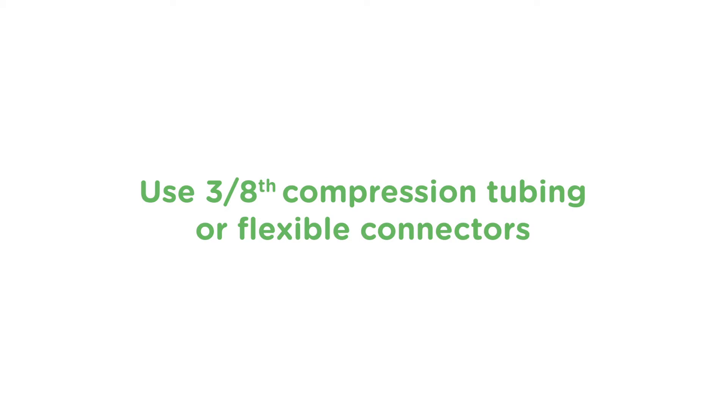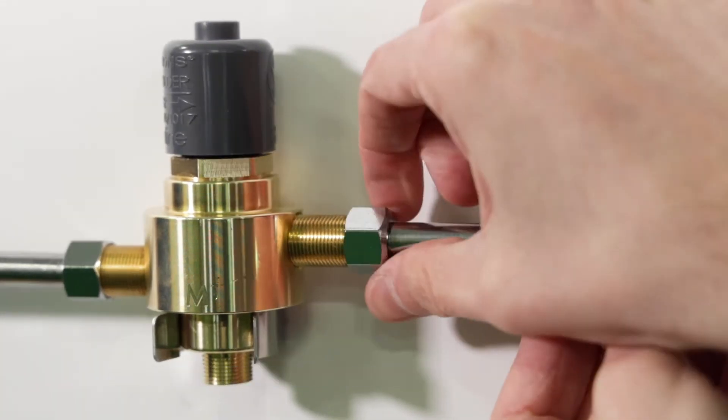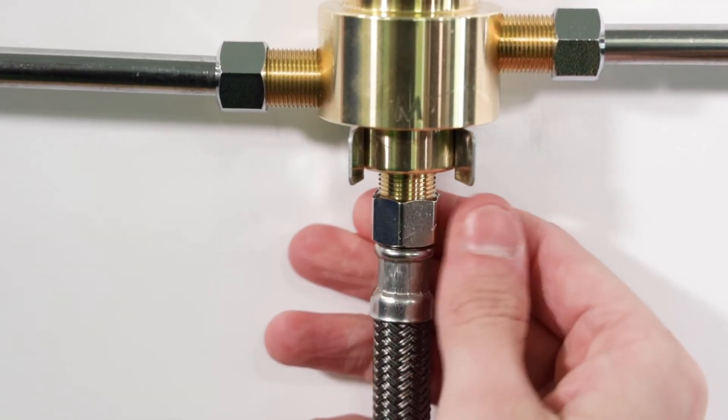Using 3/8 compression tubing or flexible connectors, connect the hot water to the hot inlet and the cold water to the cold inlet, and then connect the tempered water outlet to the single supply line of the faucet.